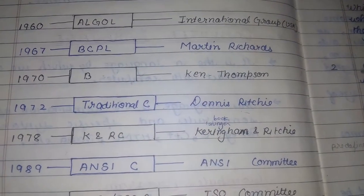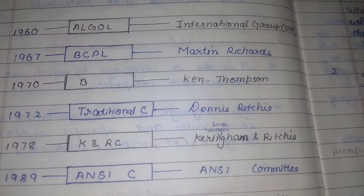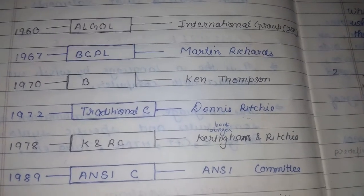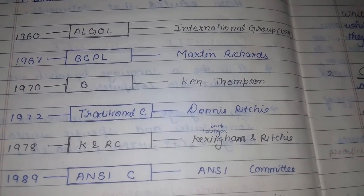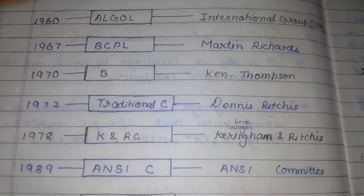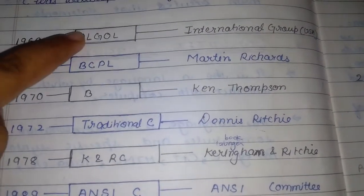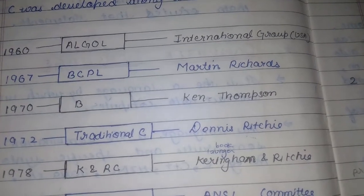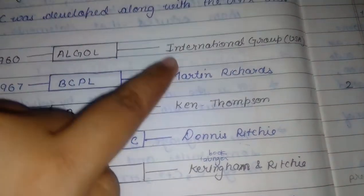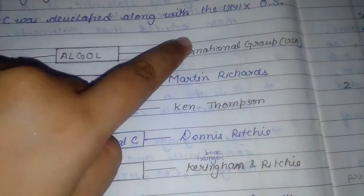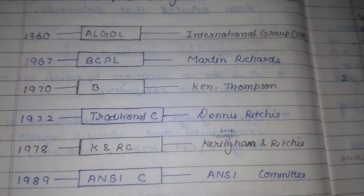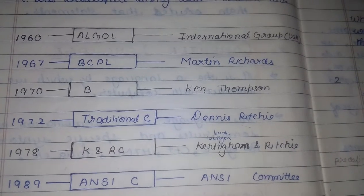We'll go through the history, starting with 1960 when ALGOL language was developed by International Group USA. These are the years, and here the languages are written along with the developers or organizations, individual developers of the organizations.